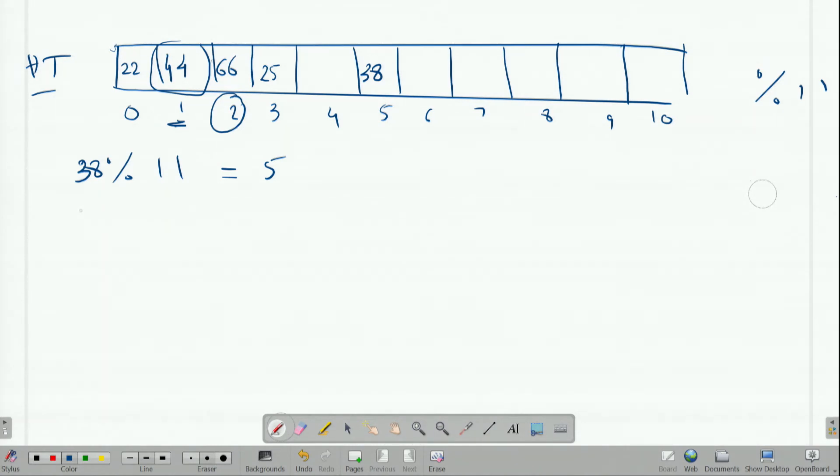But say it is already taken, then what do you do? This is what we want to learn here. Let me take one more example, 49. 49 mod 11 will be again 5. Now 5 already has 38. So what do we do?